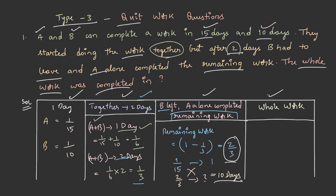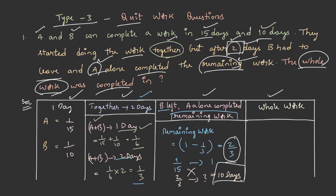But this is not the end. He is asking the time taken for the whole work to be completed. For 2 days both A and B worked together, and after that A alone completed the remaining work in 10 days. So the whole work will be completed in 10 plus 2, that is 12 days.